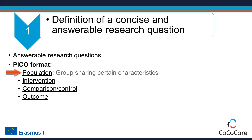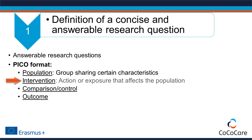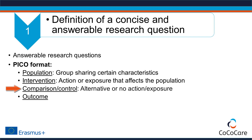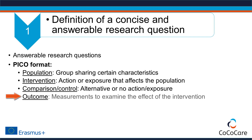The population indicates a group of subjects sharing certain characteristics. The intervention is the action or exposure that affects this population. The comparison is an alternative action or exposure — it can also be a placebo of the intervention. The outcome defines how the success of the intervention is measured.